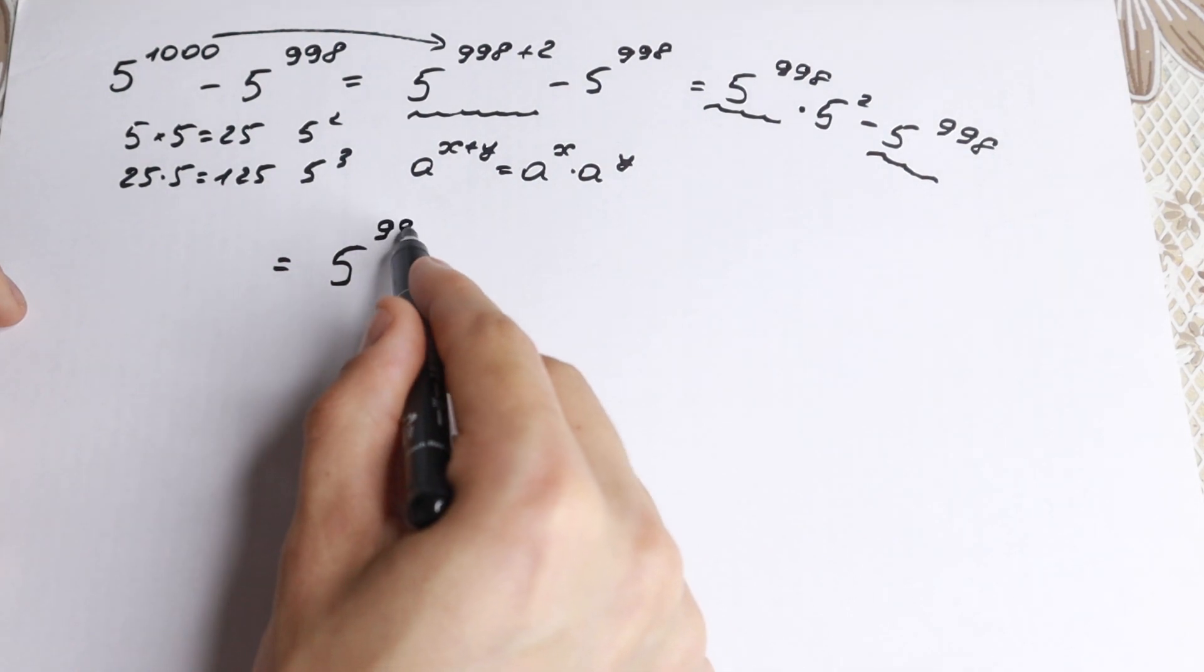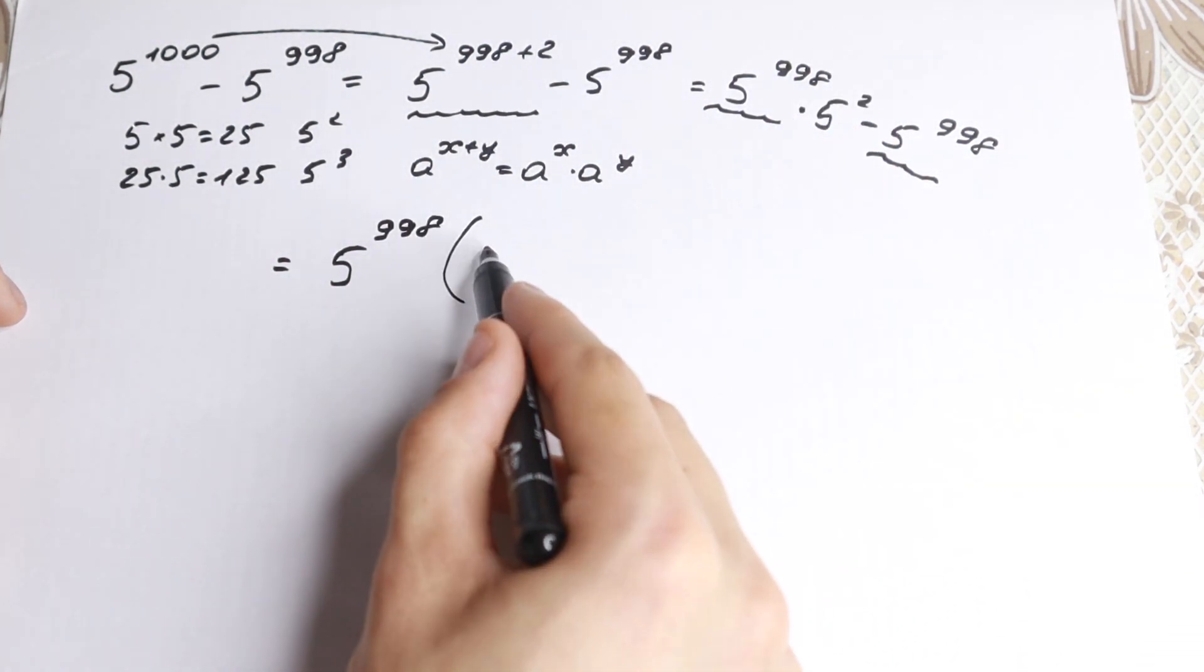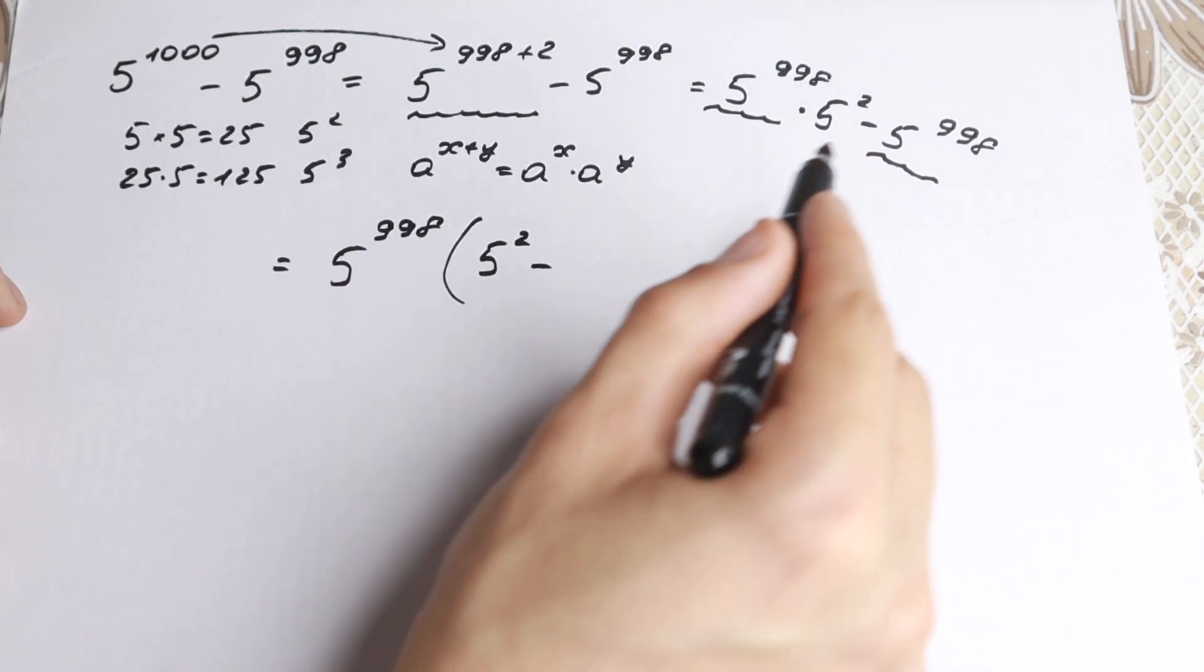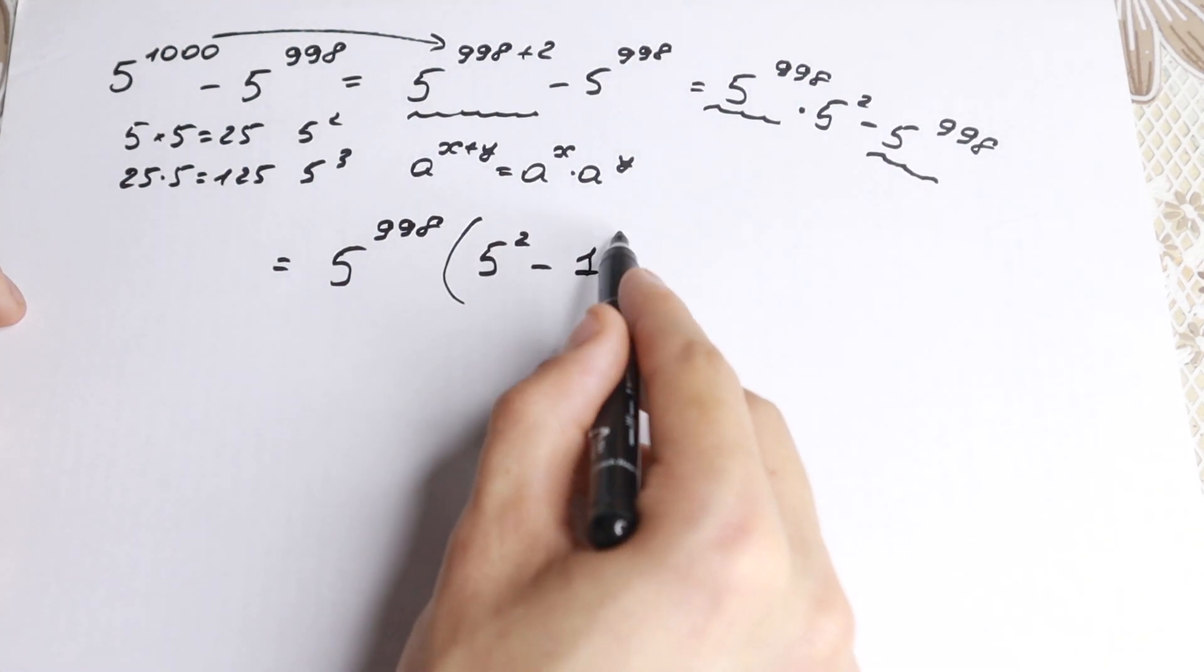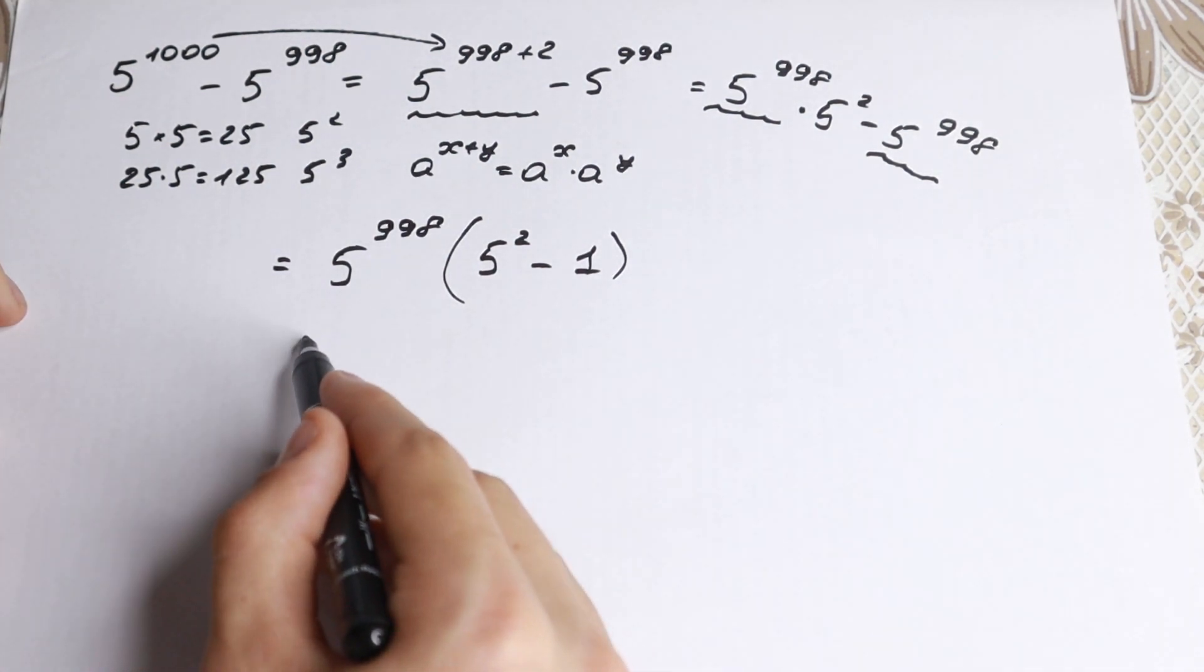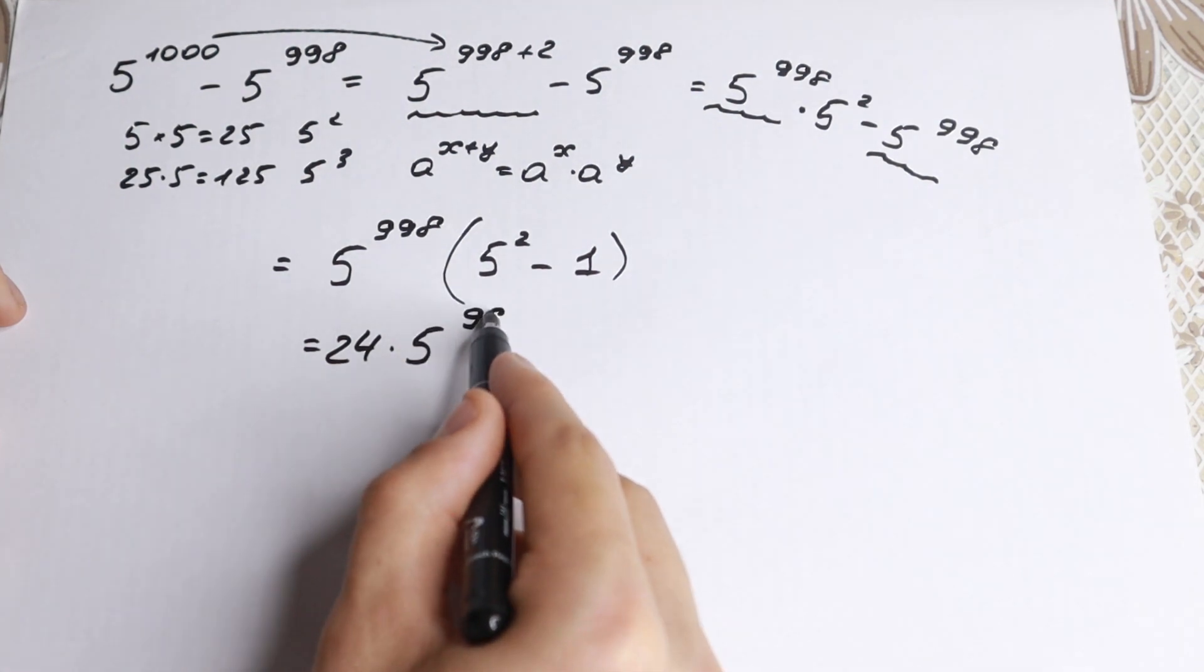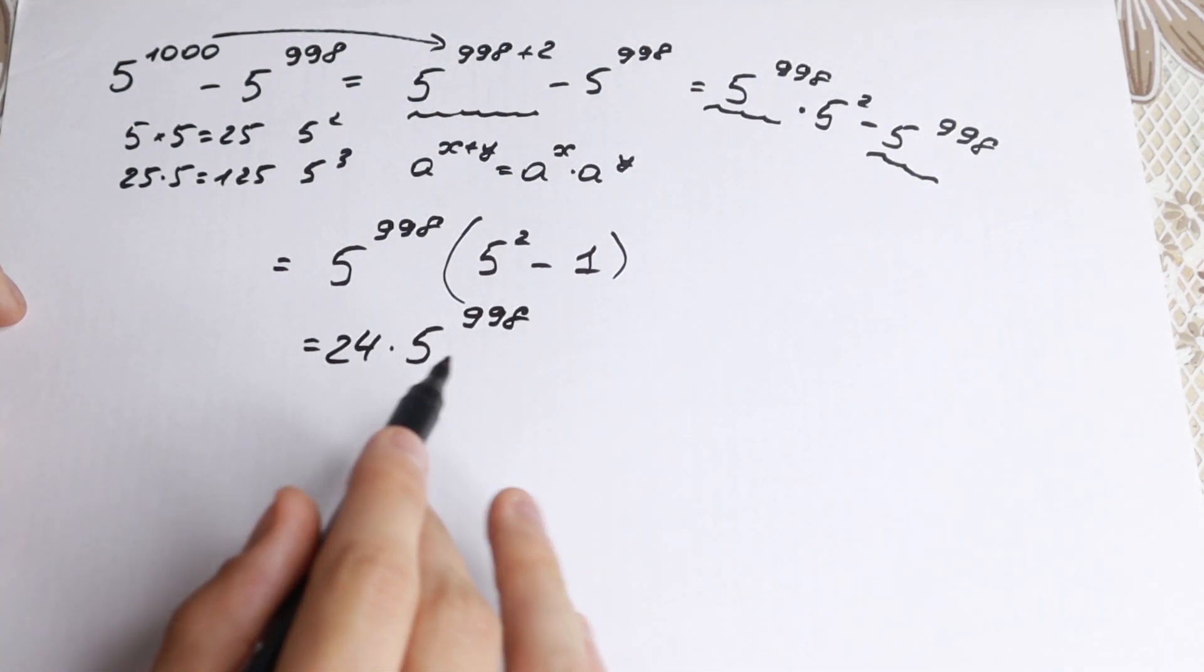Factoring out 5 to the power 998, in the parenthesis we have 5 squared minus 1. So, 5 squared is 25, minus 1 gives us 24 times 5 to the power 998. This is our answer.